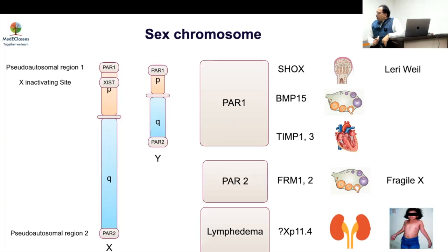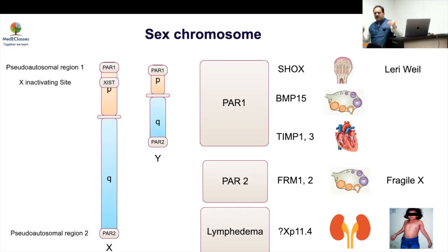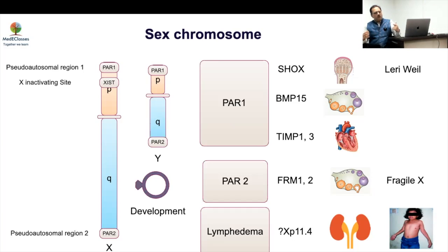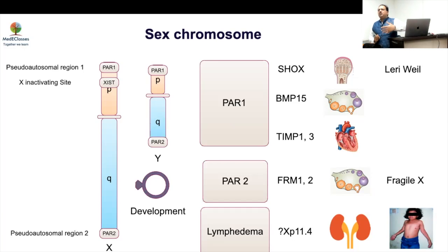In Turner syndrome, one X chromosome is intact while the other X chromosome is either completely or partially inactive. There may be situations where the chromosome is disrupted and rejoins as a ring chromosome. If the ring chromosome affects the XIST region, there will be developmental issues including more syndromic effects — mental retardation and skeletal abnormalities — which go beyond typical Turner syndrome.